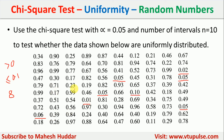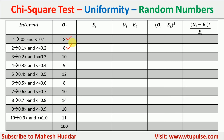Similarly, for the second interval — numbers greater than 0.1 and less than or equal to 0.2 — we count and repeat the process for all remaining intervals. The first interval gives 8, the second also gives 8, the third gives 10, and the last interval gives 11. As a cross-check, all the observed counts should sum to 100, though you must still ensure each interval's count is correct individually.